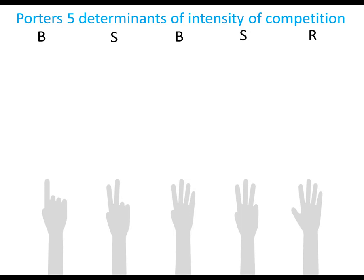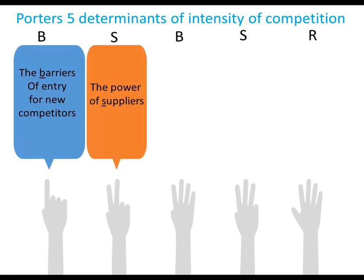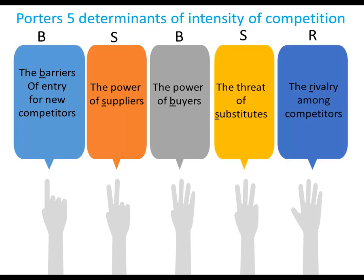Now let's put into your subconscious: B-S-B-S-R — Porter's five determinants of intensity of competition. Barriers of entry (B), power of suppliers (S), power of buyers (B), threat of substitutes (S), and rivalry among competitors (R).